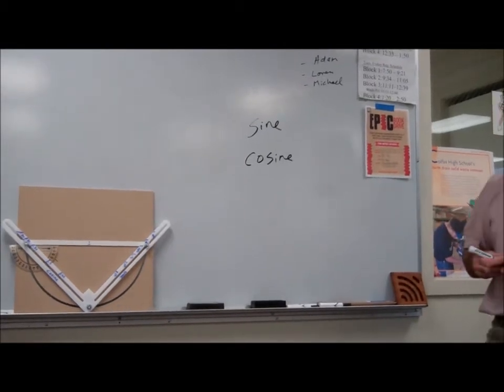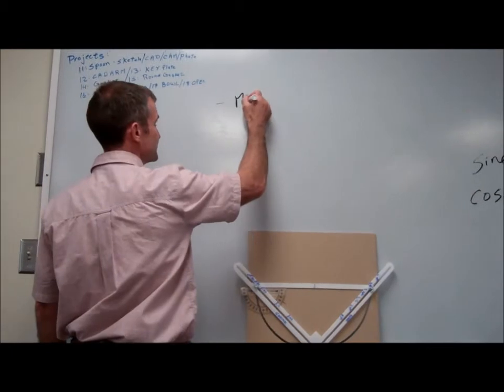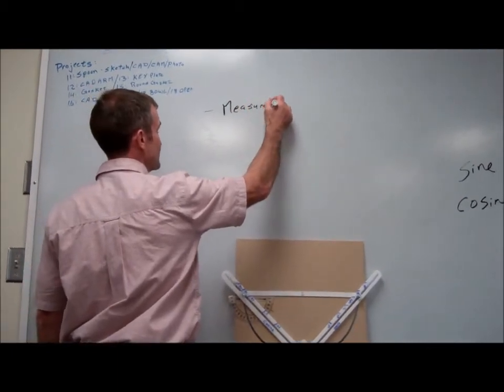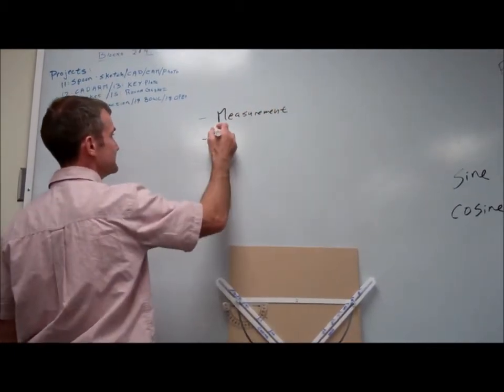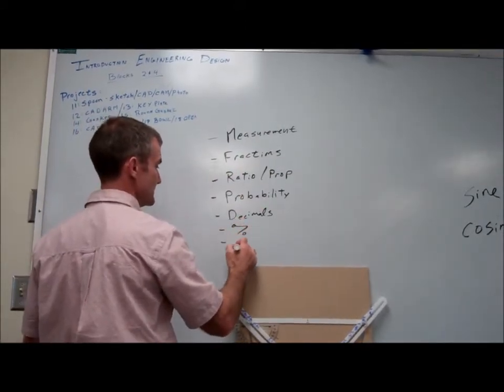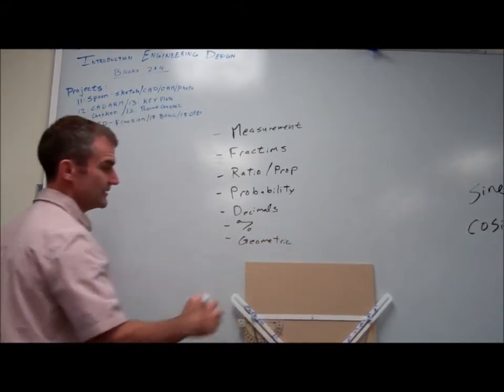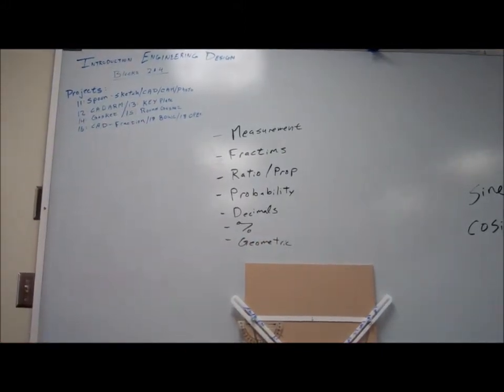So let me first run through the seven essentials of math that we learned already. Number one, measurement. Number two, fractions, ratio and proportion. Six is percents, and seven is geometric reasoning. All of these are going to get tied together in this new thing right here, trigonometry.